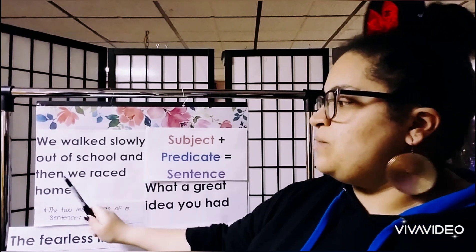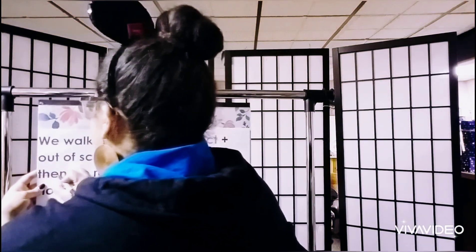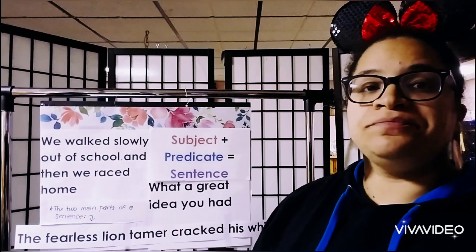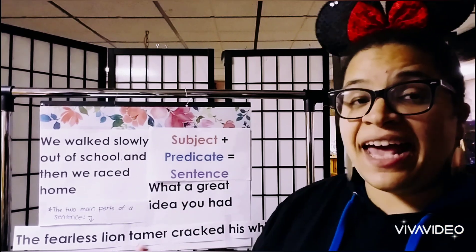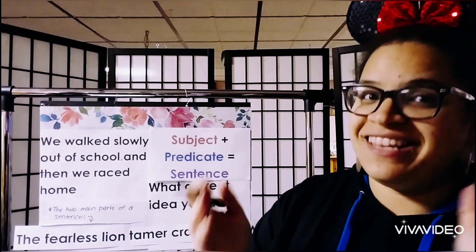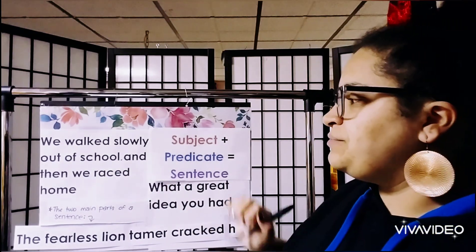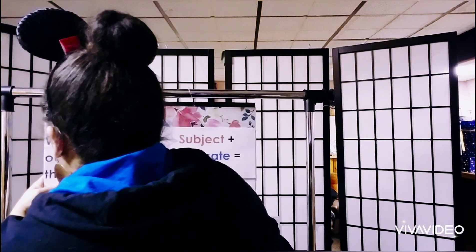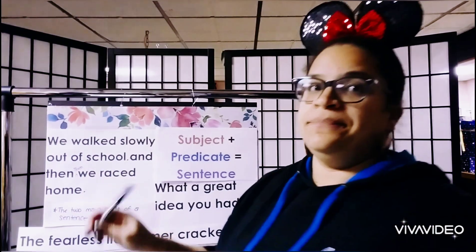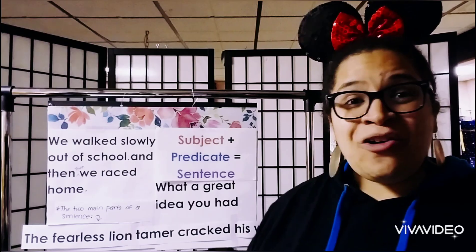Let's rewrite this run-together sentence: 'We walked slowly out of school, and then we raced home.' We're going to cross out the 'and then' and put a period. Now we have one sentence: 'We walked slowly out of school.' Then for our next sentence, we put 'Then' with a capital T: 'Then we raced home,' and put a period at the end. So now we have two complete sentences.